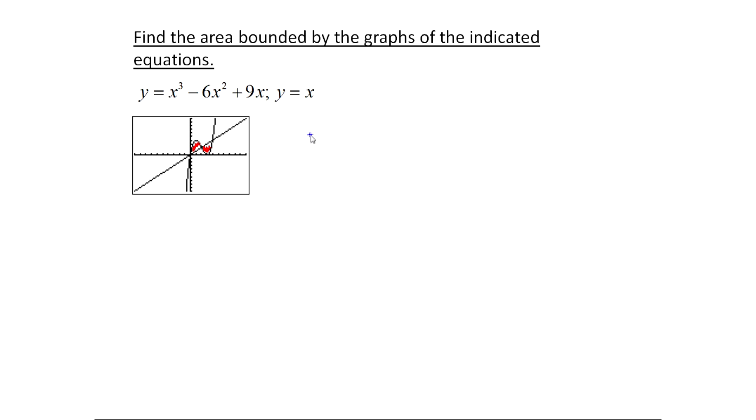So I wanted to do that first. So anytime you're not given a range of values, you're going to have to figure out the intersection points. The intersection points are going to be wherever the graphs equal, or excuse me, wherever the equations equal. So that would be the solutions to this equation. We didn't have to do this before because we were given a range of values already. Okay, so when I simplify this, I'm going to bring the x over, I get x cubed minus 6x squared plus 8x equals 0.